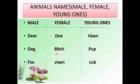Next we have deer — female: doe, young: fawn. Next is dog — female: bitch, young: pup. Next is fox — female: vixen, young: cub.